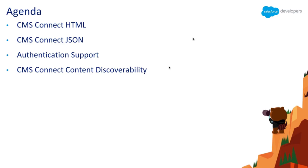With that, we're ready to get started with today's session: Integrate CMS Content into Lightning Communities with CMS Connect. I'm Shipra, and the agenda of today's session is a deep dive into the CMS Connect feature. CMS Connect helps you display content from third-party external content management systems in your Salesforce Lightning Communities in a secure and performant way.